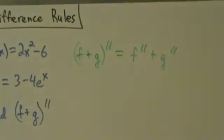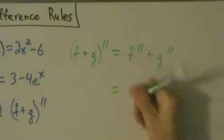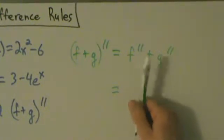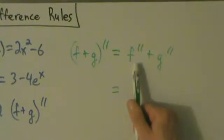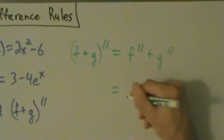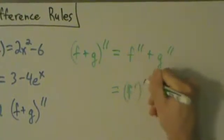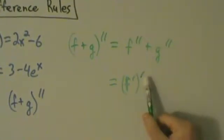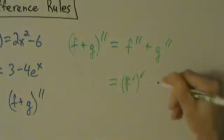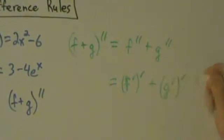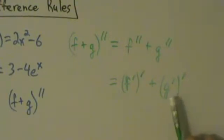So what is f''? Well, that's the second derivative of f, right? And the second derivative is the derivative of the first derivative. So you can think of that as (f')'. In other words, derivative of the derivative. And then same thing with g'', you can think of that as (g')'. So it's the derivative of the derivative.